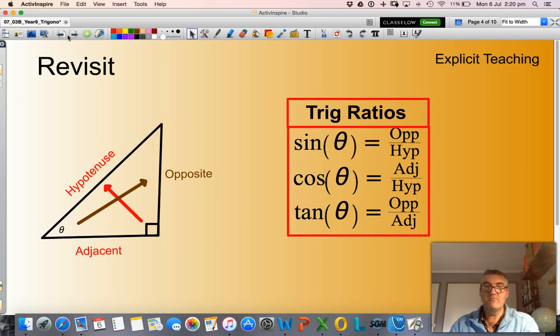Just as a recap from previous sessions, you need to be able to identify or name the sides in a right angle triangle. Hypotenuse, the side that is across from the right angle.